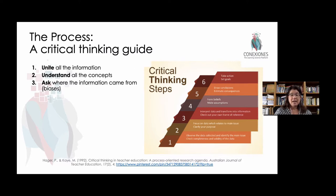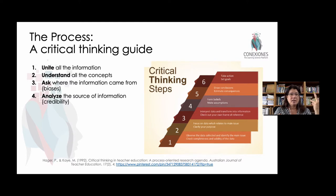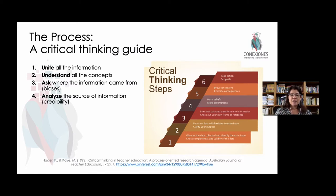Depending on the biases that an individual author might have, you might be getting a specific perspective and not other information. But you should also analyze the source of that information and what it is actually trying to tell you. So if you have two different articles about evolution, and one is written by a Darwinian society member and another is written by a Christian, you have two different perspectives, and you have to take that into consideration when you analyze the findings that are presented.